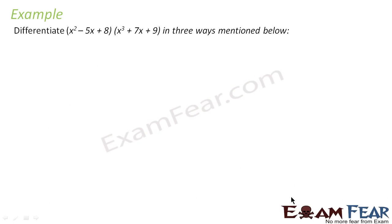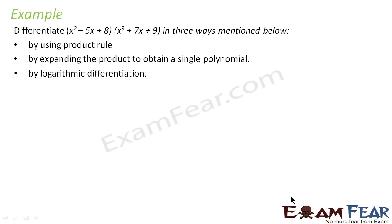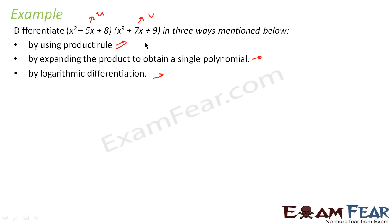Let us take one more example. We have a polynomial and we have to differentiate it using three different ways. I won't solve the full thing, but I'll tell you how. First, using the product rule — assume one factor as u and the other as v, then apply u'v + uv'. Second, expand the product to obtain a single polynomial and differentiate. Third, apply log to both sides: log y = log u + log v, then differentiate.